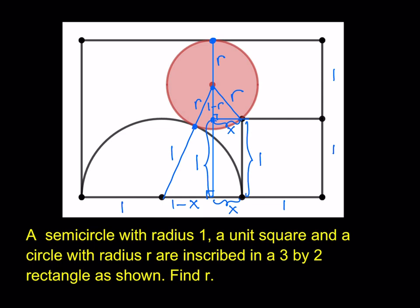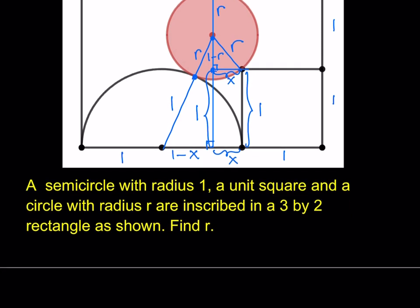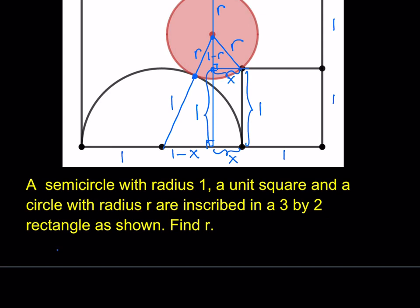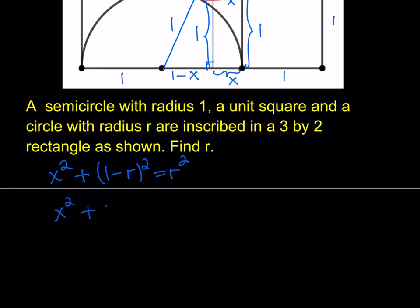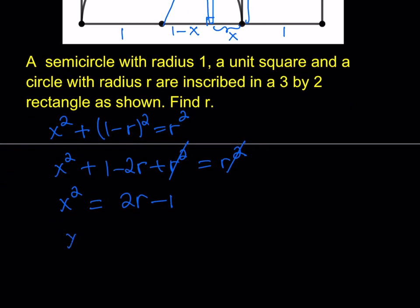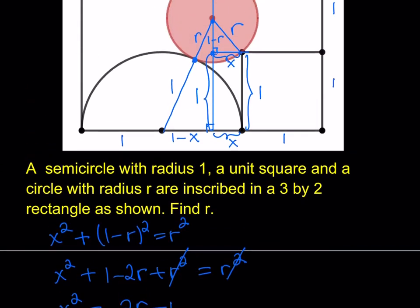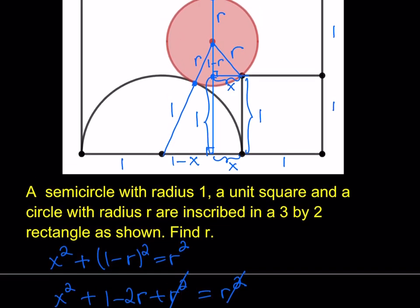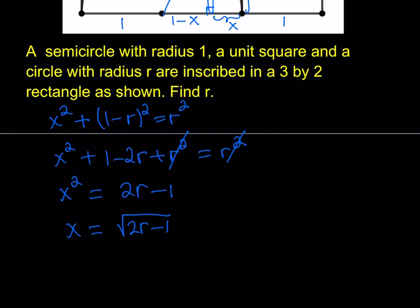Let's start with the small right triangle. It tells us that x² + (1 − r)² = r². Expanding: 1 − 2r + r² = r². The r² cancels, so isolating x² gives us x² = 2r − 1, and taking the square root: x = √(2r − 1). Obviously r is greater than one half, so this is a positive quantity.